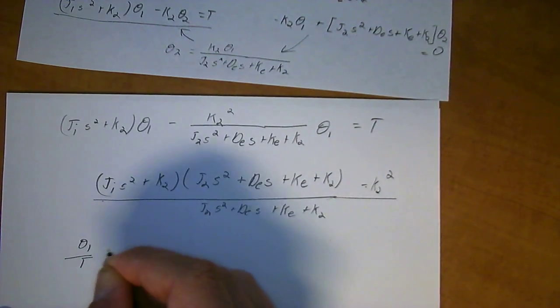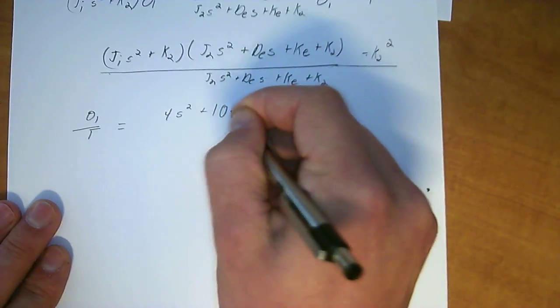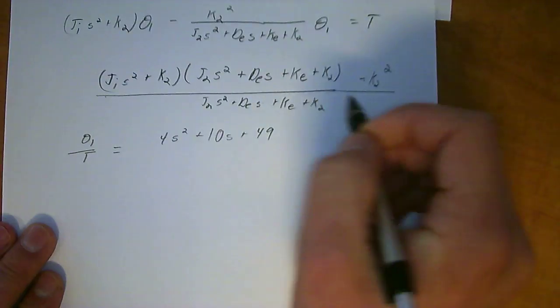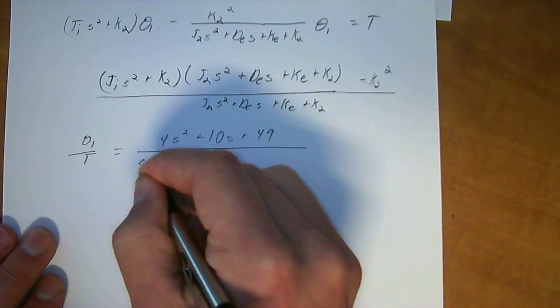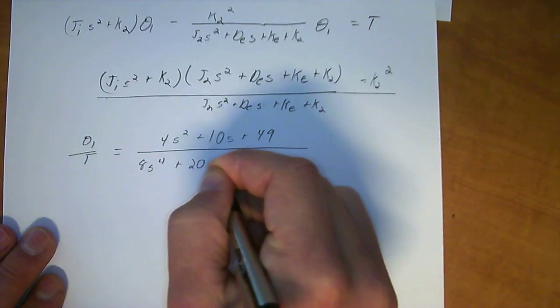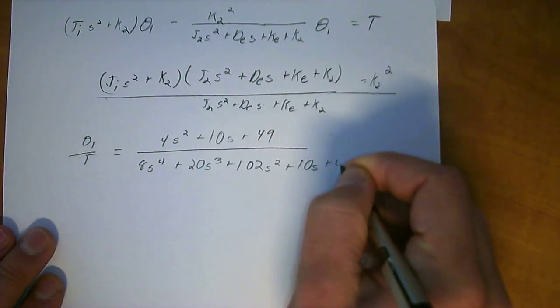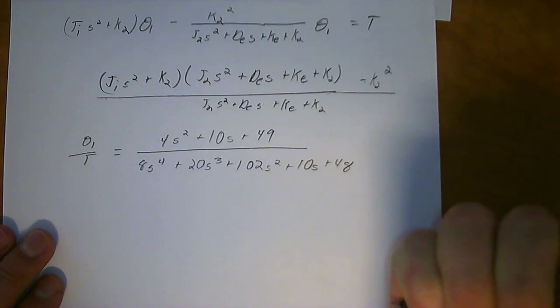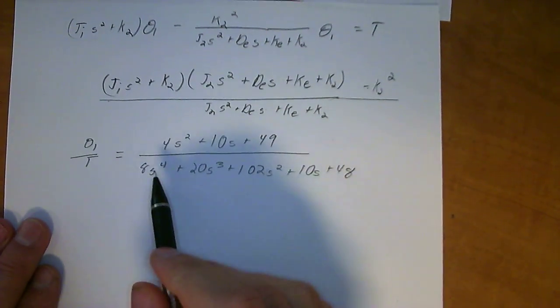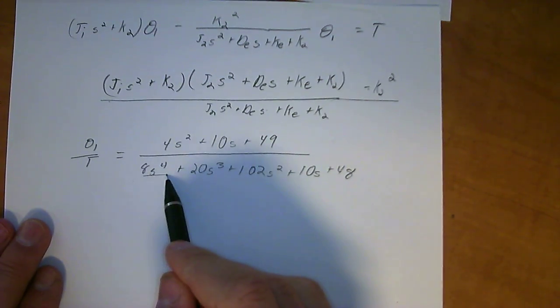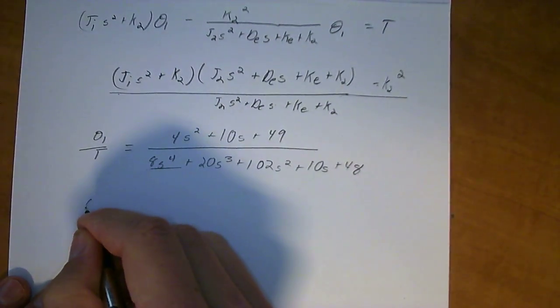So then Theta1 over T is equal to 4S squared plus 10S plus 49 - this is inputting all the values in here and calculating them out - all over 8S to the 4th plus 20S cubed plus 102S squared plus 10S plus 48. And that is the transfer function that's almost finished, but it's not really in proper form. To be in proper form, the leading coefficient has to be 1 in the denominator. So we have to divide this whole thing through by 8.